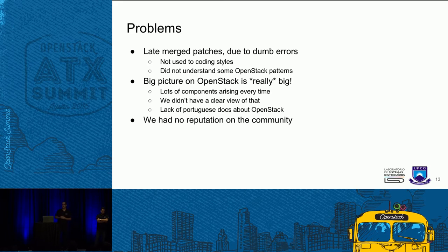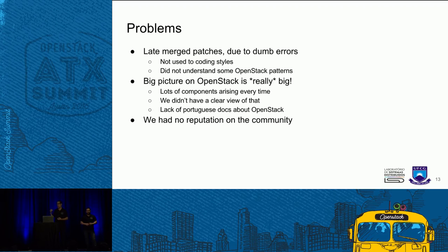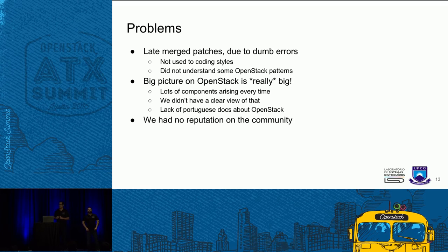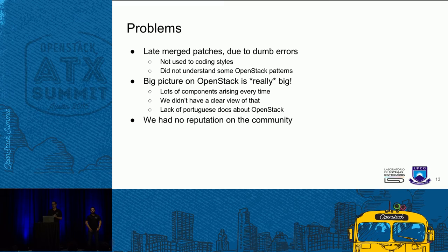We had a couple of problems in this first release. We had late-merged patches — we didn't follow the coding styles in Python, and we sent patches with bad commit messages. These things caused our patches to be late-merged. Another thing we noticed is that the big picture on OpenStack is really big. It's difficult when starting to contribute to understand Nova, Keystone, Neutron, Glance — it's a lot of things.